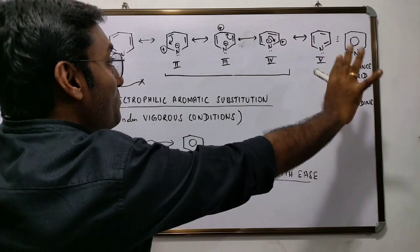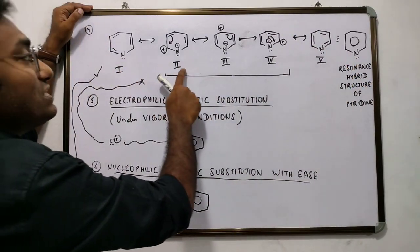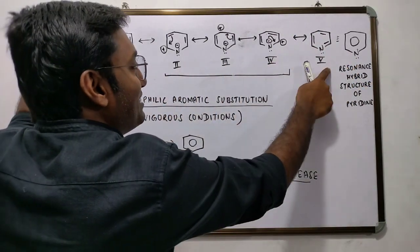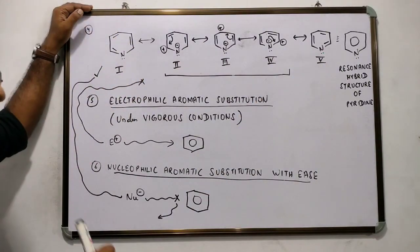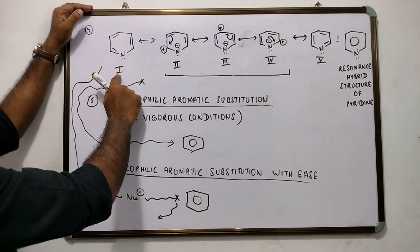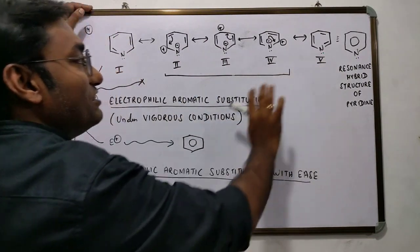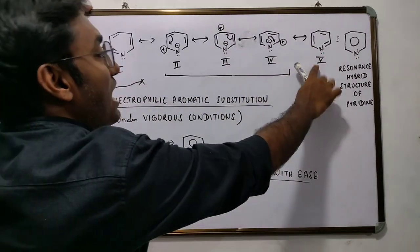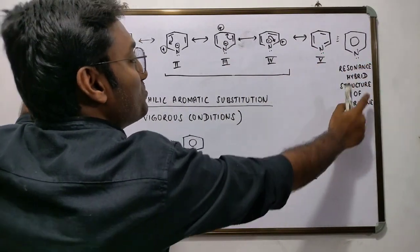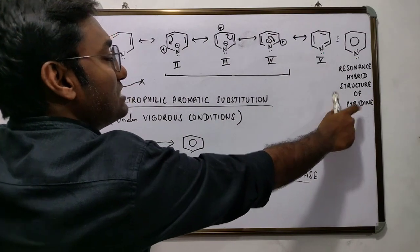Which is a combination of five resonating structures of pyridine, of which structure number 1 and structure number 5, the kekule resonating forms, have a major contribution towards the resonance hybrid structure.